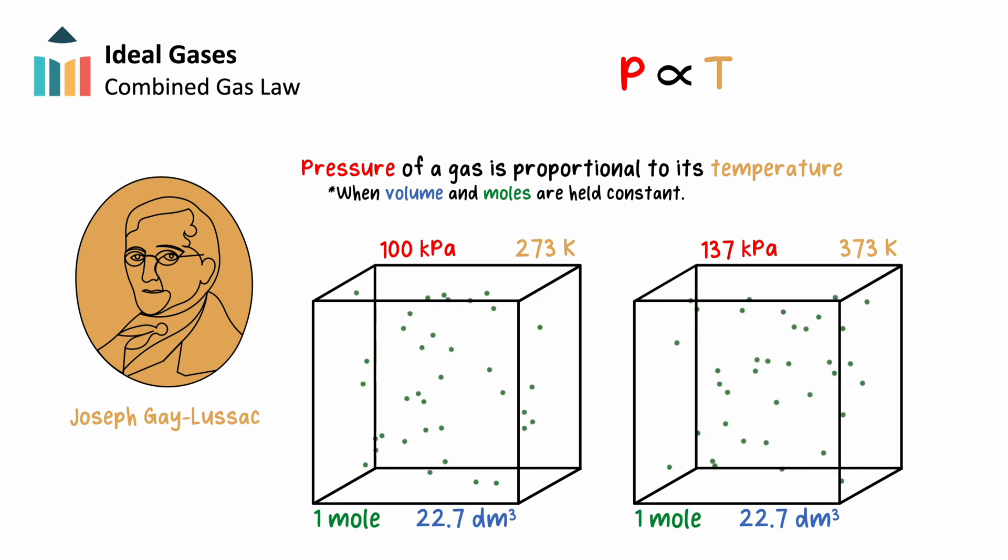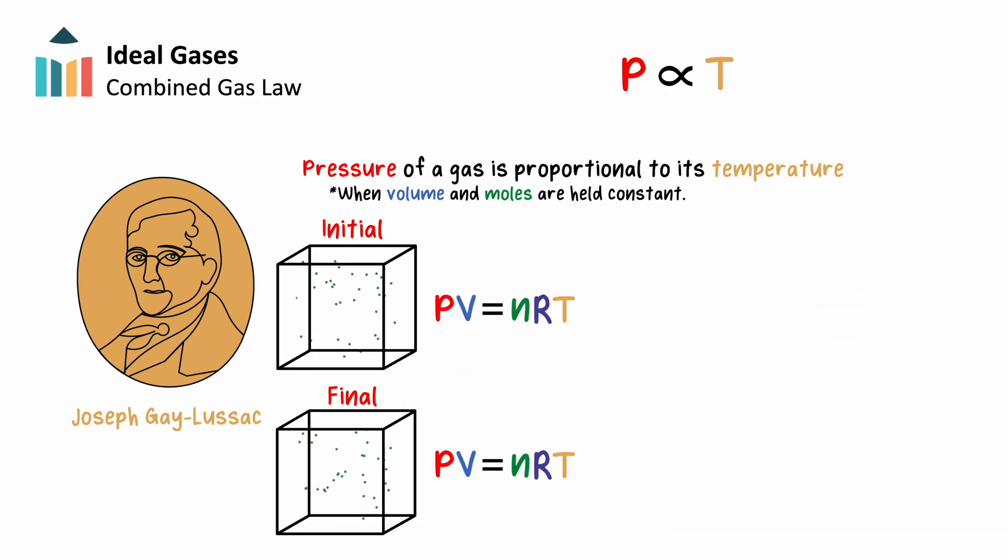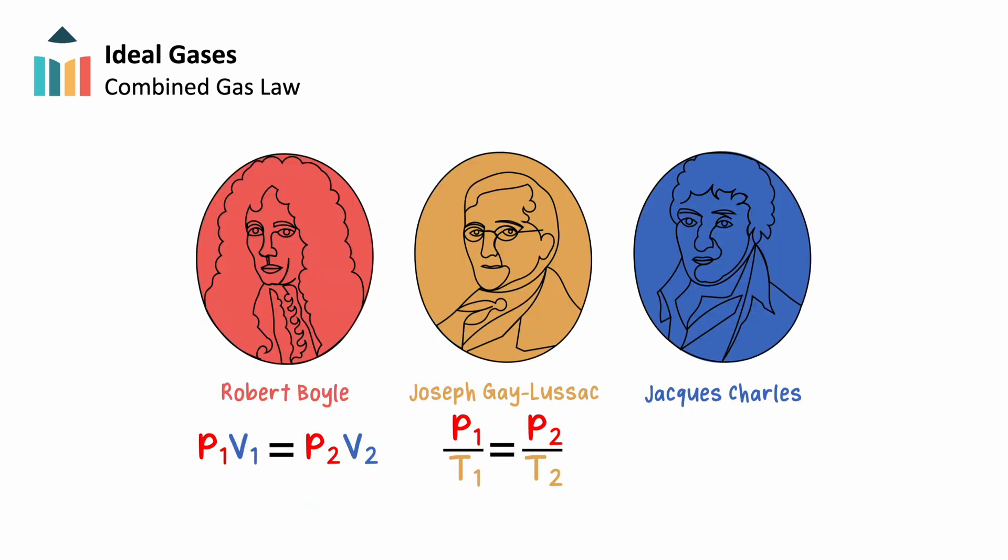We could again derive the equation for this relationship using the ideal gas law. This time, pressure and temperature are our changing variables, and if we solve for these variables, we find that they are both equal to our constants, nR over v, showing that p1 divided by T1 and p2 divided by T2 must equal each other. This defines our relationship between changing pressure and temperature, as outlined by Gay-Lussac's gas law: p1 divided by T1 equals p2 divided by T2.